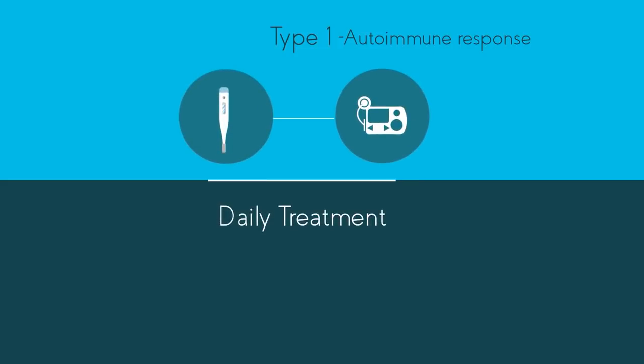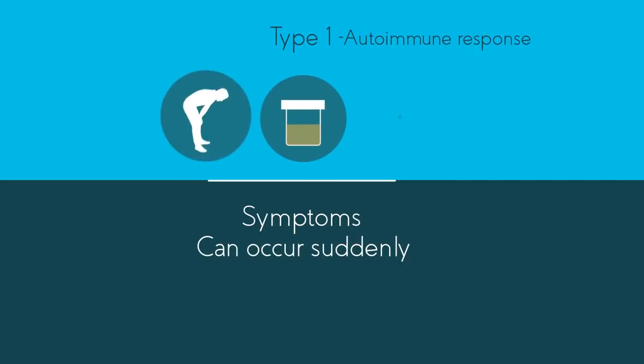The symptoms of type 1 diabetes are thirst, needing to regularly pass urine, tiredness and weight loss, and can occur very suddenly.